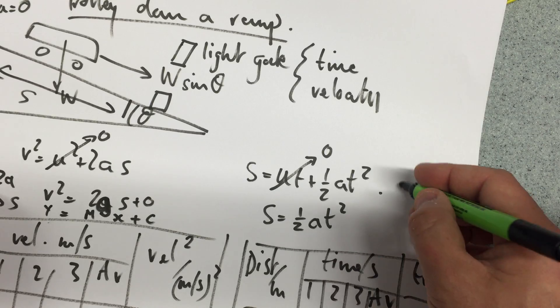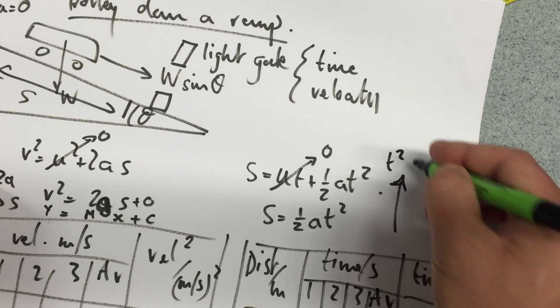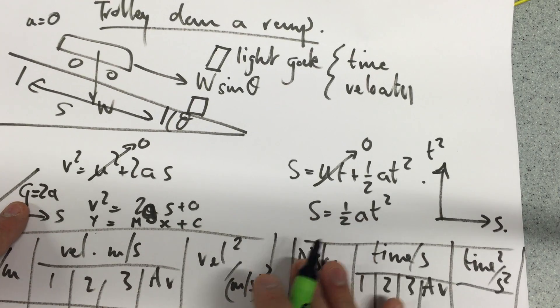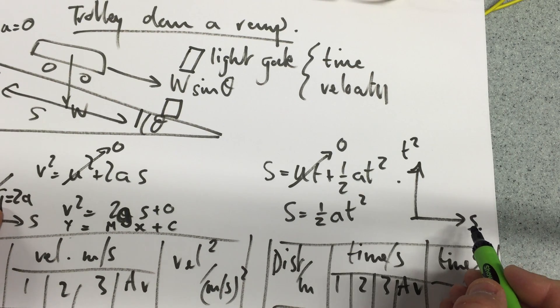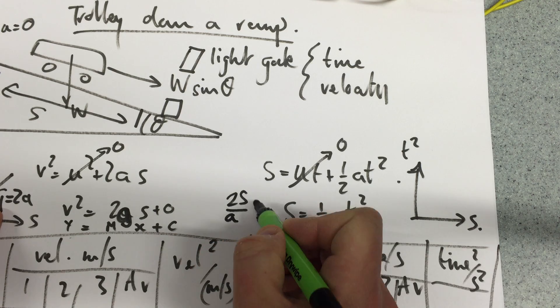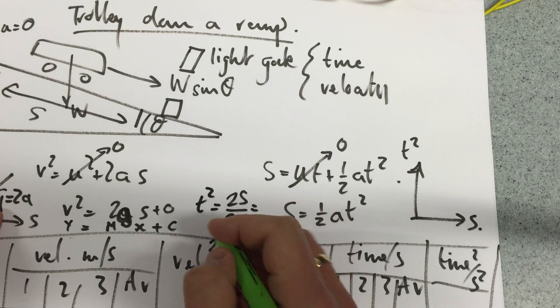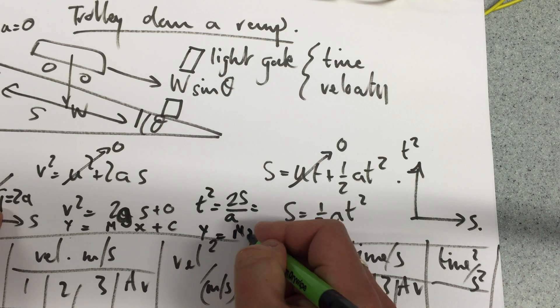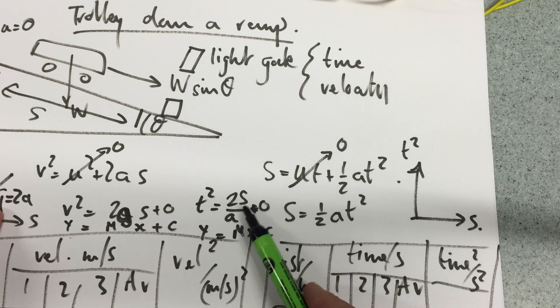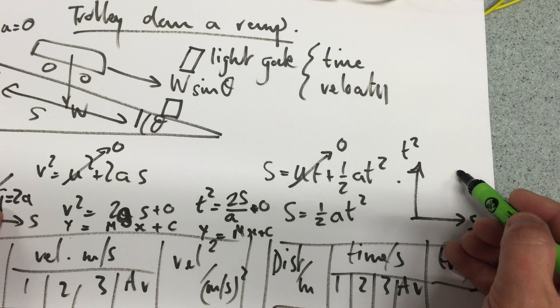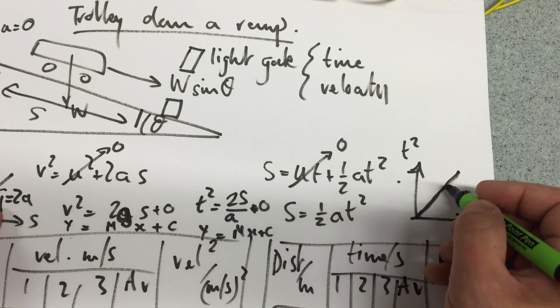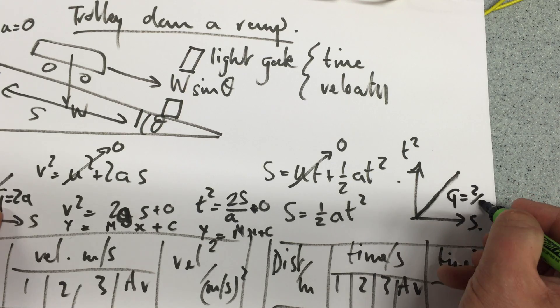On this side, I'll be plotting t squared against s, and a small little rearrangement is necessary. The reason I put s there is because that's my independent variable. So 2s over a equals t squared. y equals mx plus c plus 0. So therefore, it should be a straight line through the origin with the gradient equaling 2 over a.